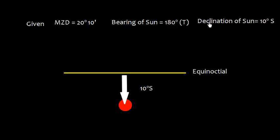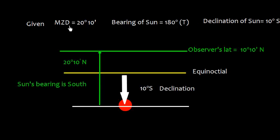Example 2: Meridian zenith distance is 20°10', bearing of the sun is 180° True (south), and declination of the sun is 10° South. The equinoctial is drawn, with the sun 10° southward. Since the bearing is south, the meridian zenith distance is named north — so from the celestial body we go upward by 20°10'. The observer's latitude is 20°10' minus 10° = 10°10' North.